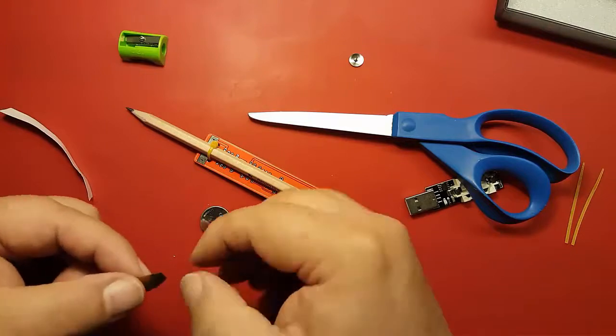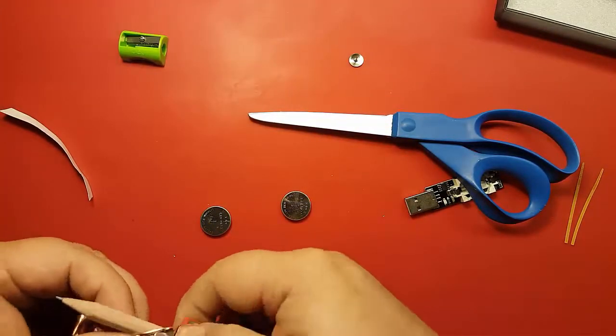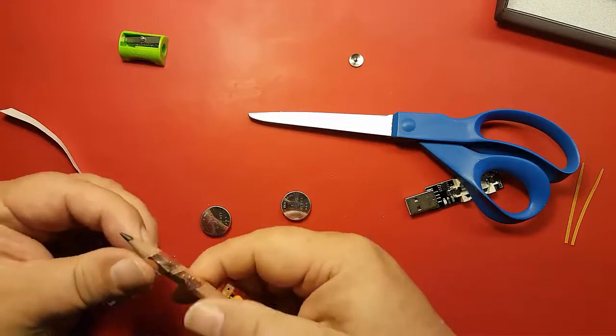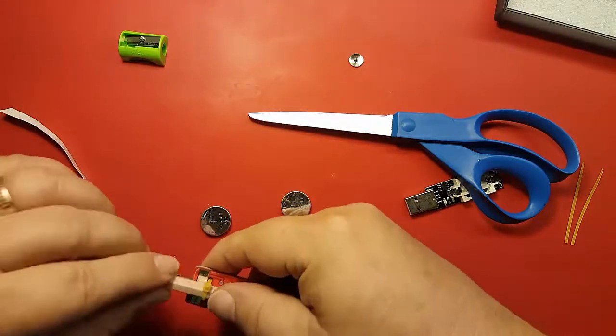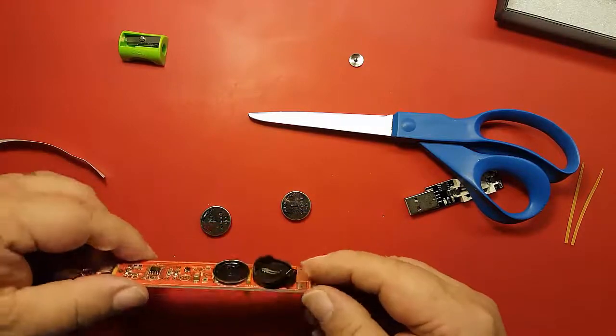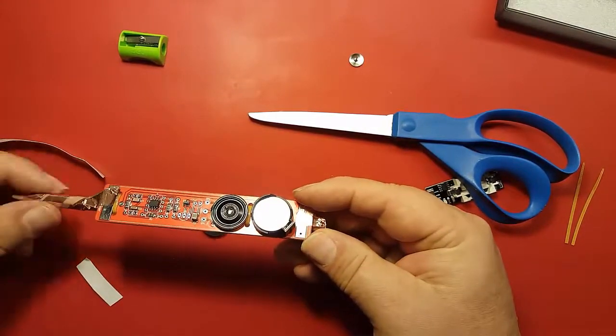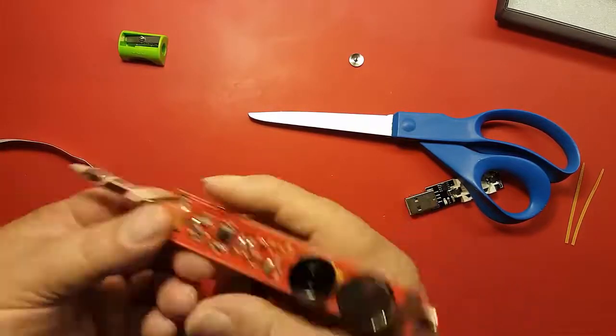One end of the copper strip goes onto the bottom connector, and then it just kind of gets wrapped around the pencil. Something I learned here is don't go all the way down because you're going to want to sharpen the pencil again, and you don't want the copper tape to get in the way. You put the battery in and you're pretty much done.